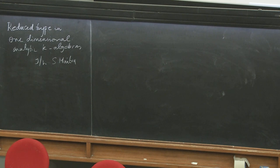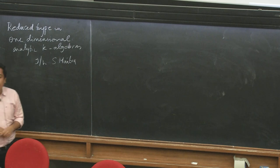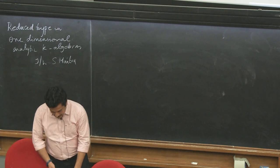This came up as some kind of an offshoot of another problem I was working on. I'll explain what reduced type is in the setting and why it came to be defined, and how it compares to the usual Cohen-Macaulay type.